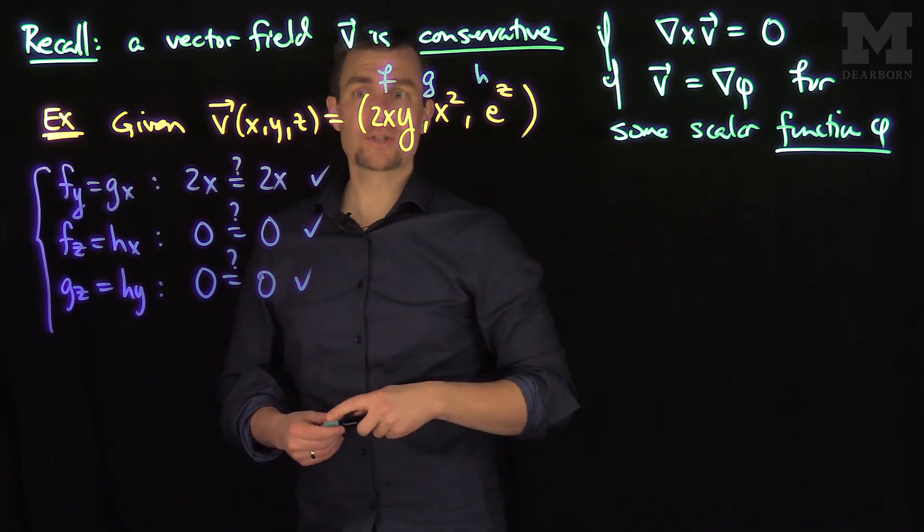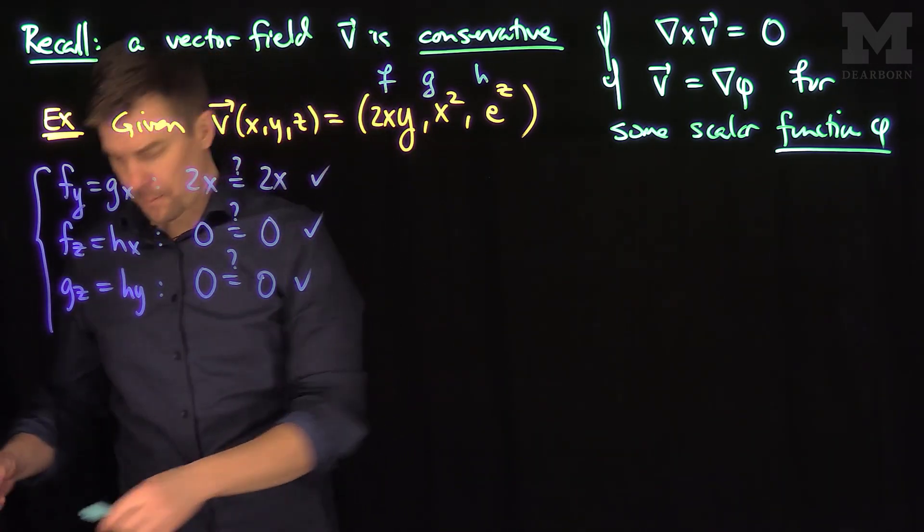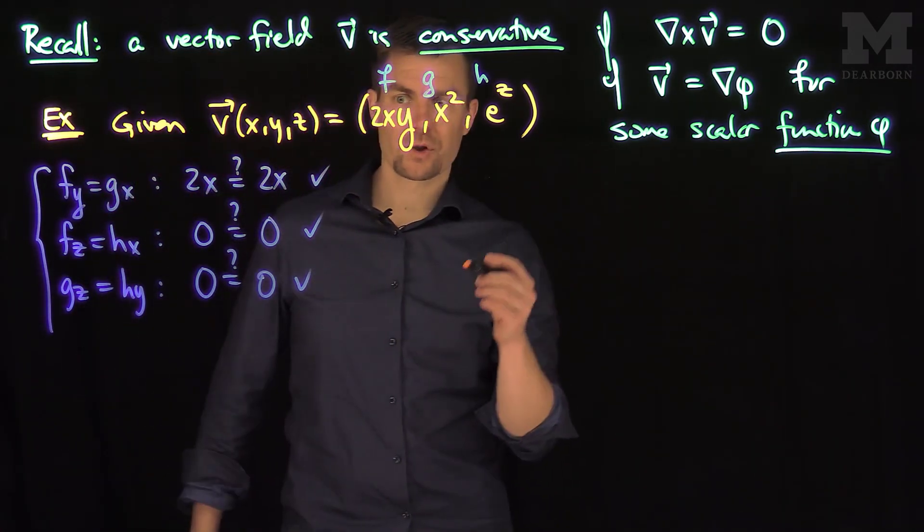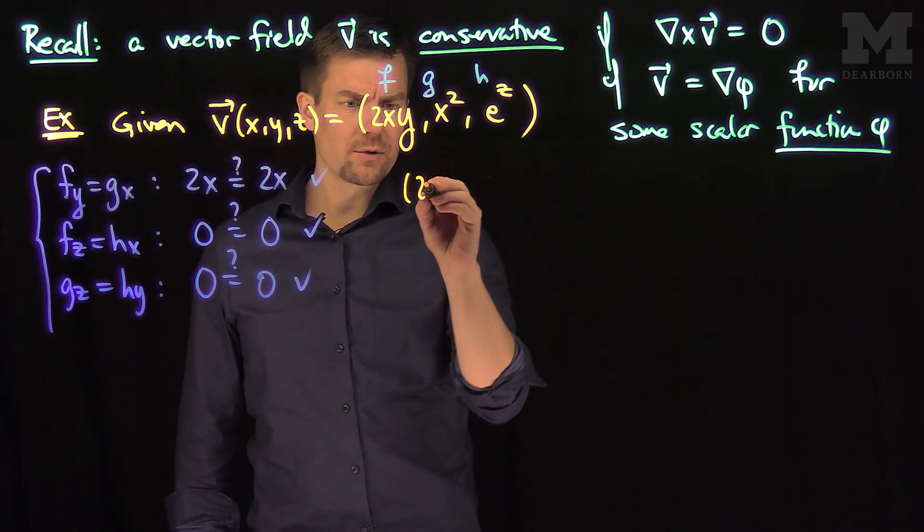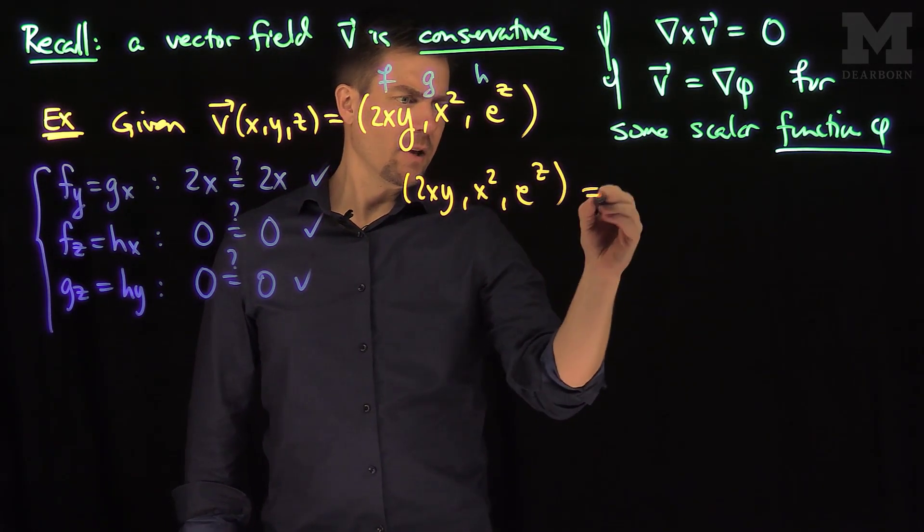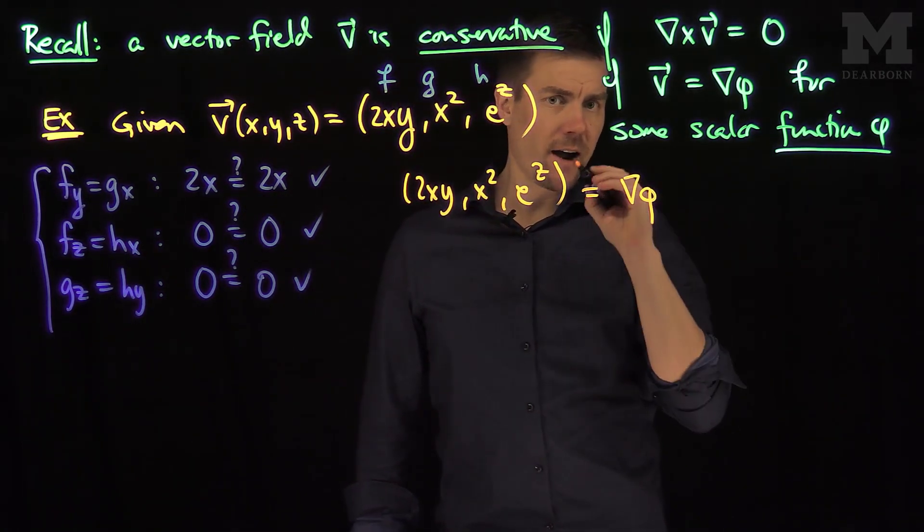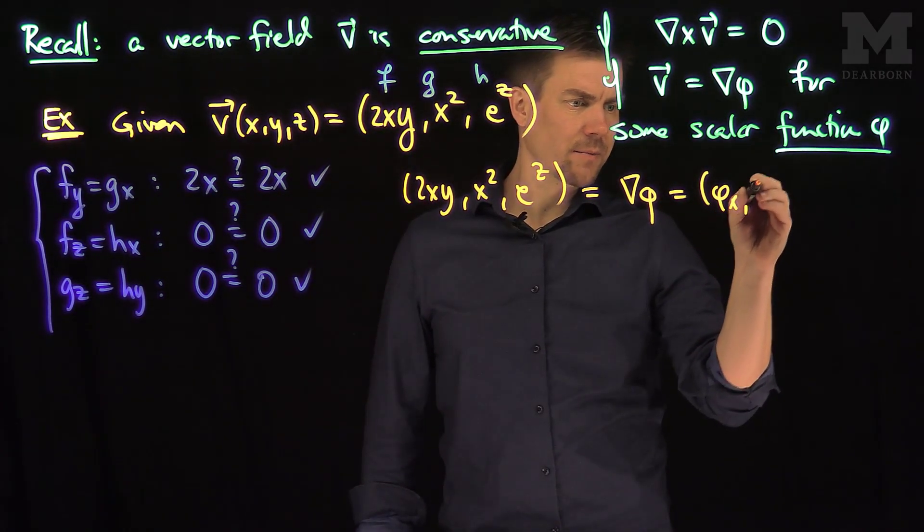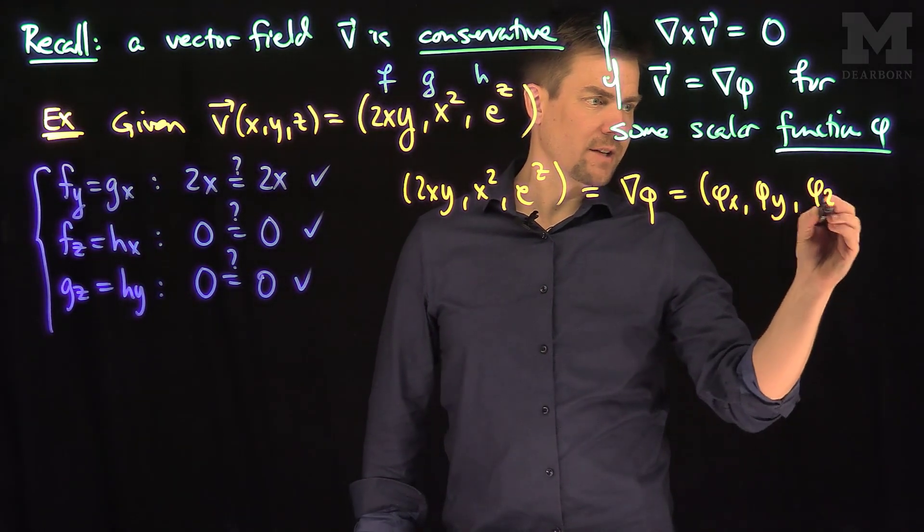Now we have that the vector field is conservative. Let's find the potential function, the scalar potential function. So we know that 2XY, X squared, E to the Z is equal to the gradient of phi for some scalar function phi. And this is phi X, phi Y, phi Z.